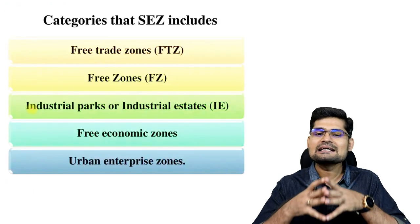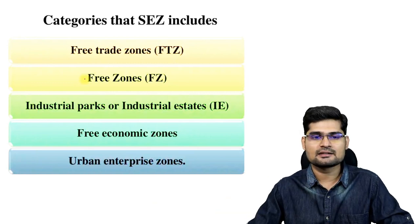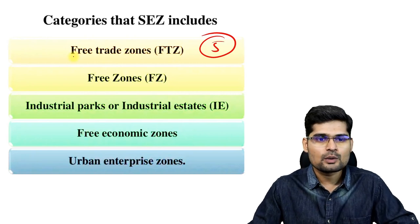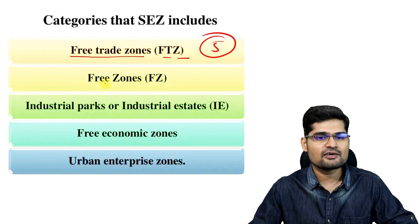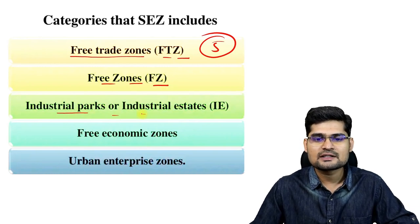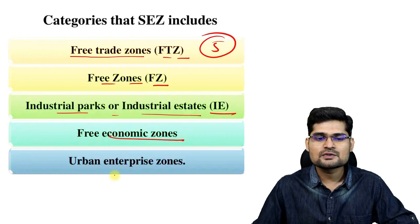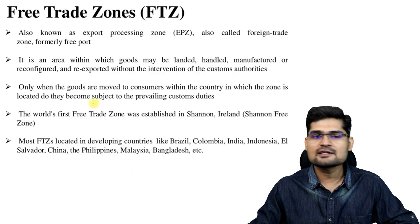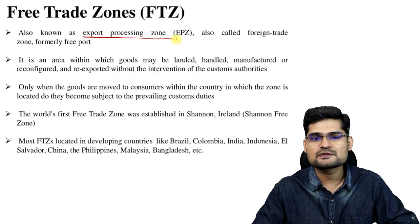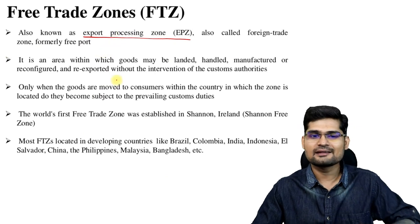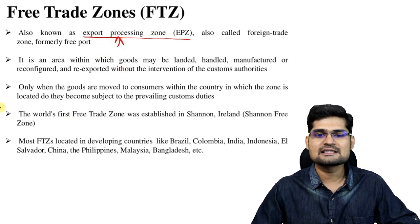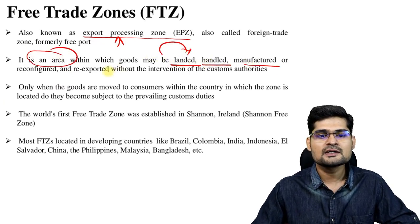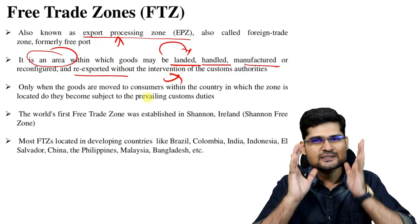Now let's categorize SEZs into five functional categories. One is free trade zones (FTZ), also known as export processing zones — as in the example of Kandla port in India. These are areas where goods are specially landed, handled, and manufactured specifically to be exported. It's export oriented.